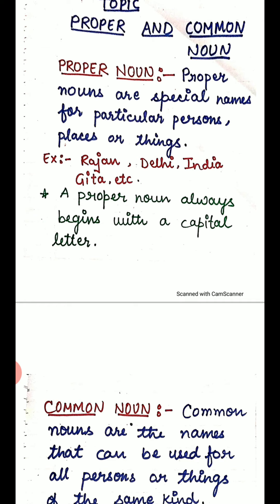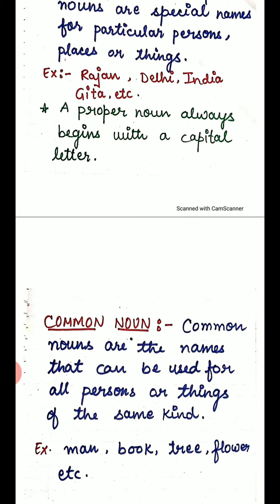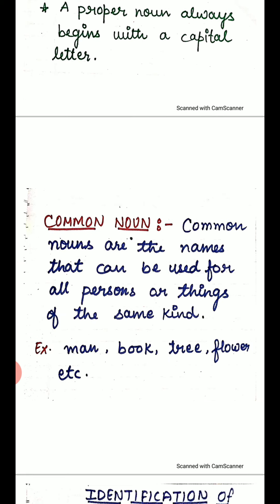And what is common noun? Common nouns are the names that can be used for all persons or things of the same kind. Examples: man, book, tree, flower, etc.